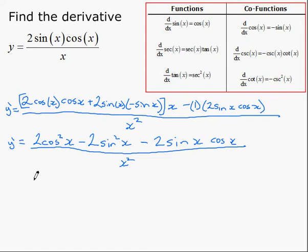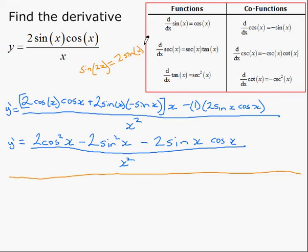Now that's one way to do that question. This question could also be done using trig identities. Provided you remember or you recognize that the sine of twice an angle is equal to twice the sine and the cosine of the angle. So if we remember that rule, that's an identity for double angle, well, we can replace this with sine 2x. So rewriting the function, we could simply do sine of 2x over x.